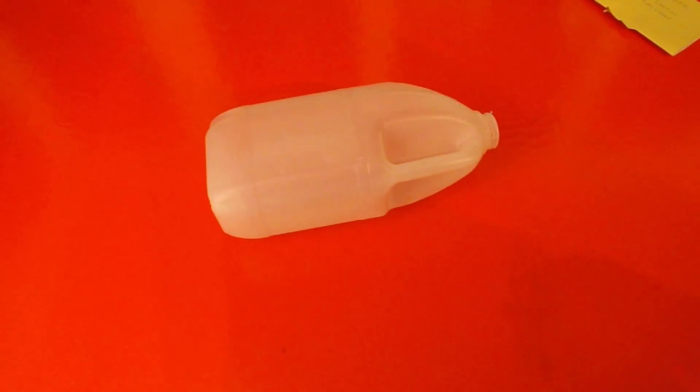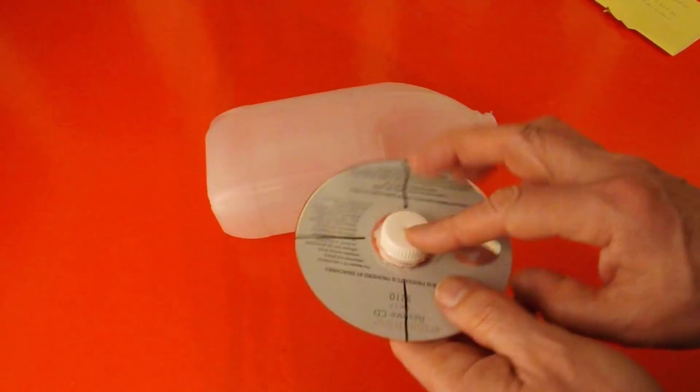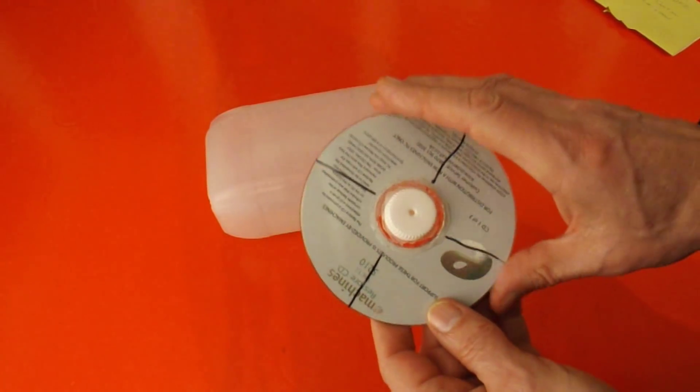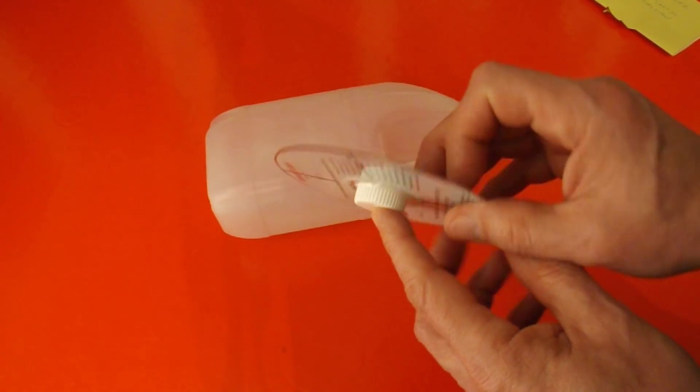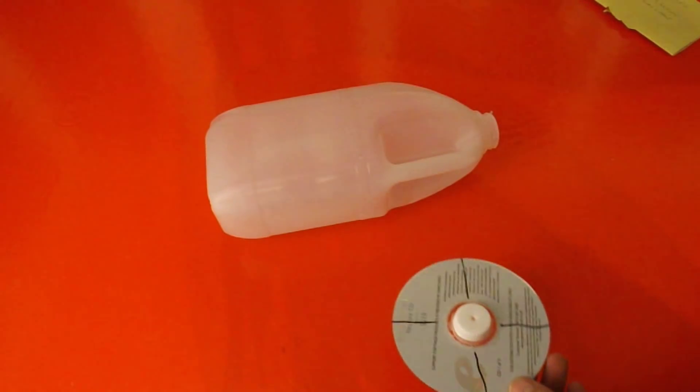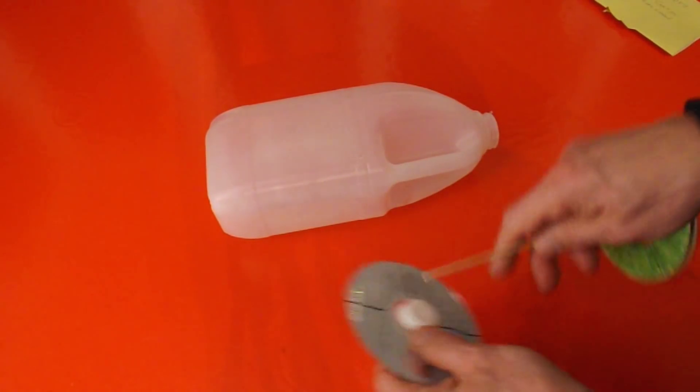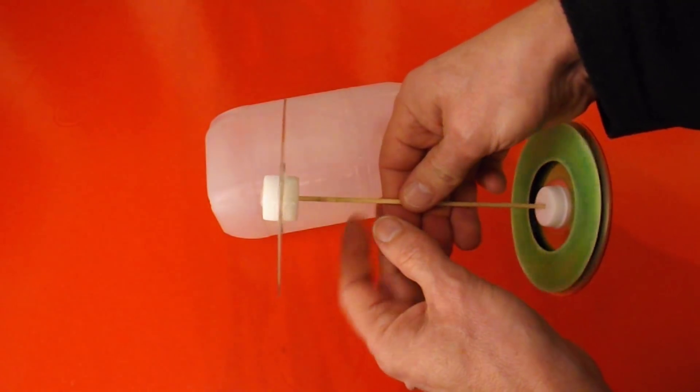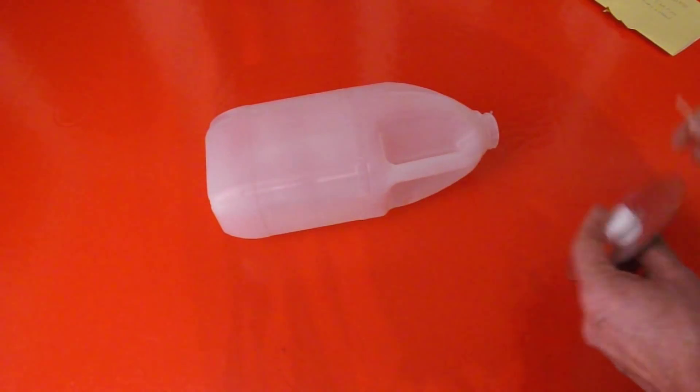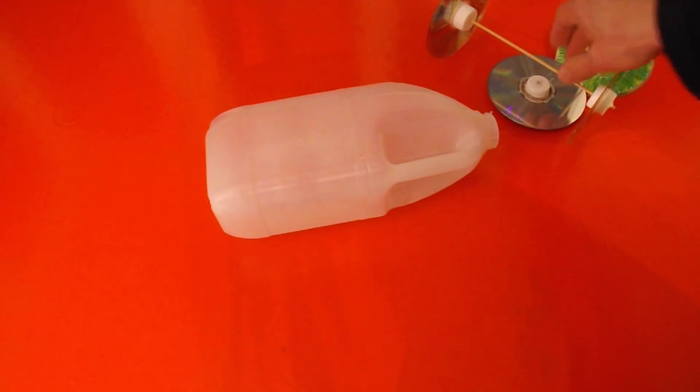For wheels we'll use the good old CDs with bottle tops in the middle. If you don't know how to make these there'll be a link in the video description to show you how to make them. That'll save me a bit of time. And I'll use barbecue skewers as the axles. Got them ready made.